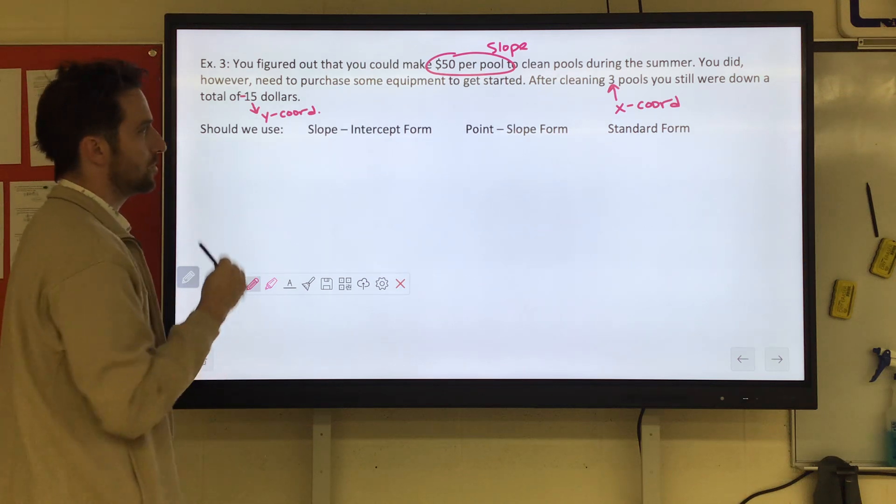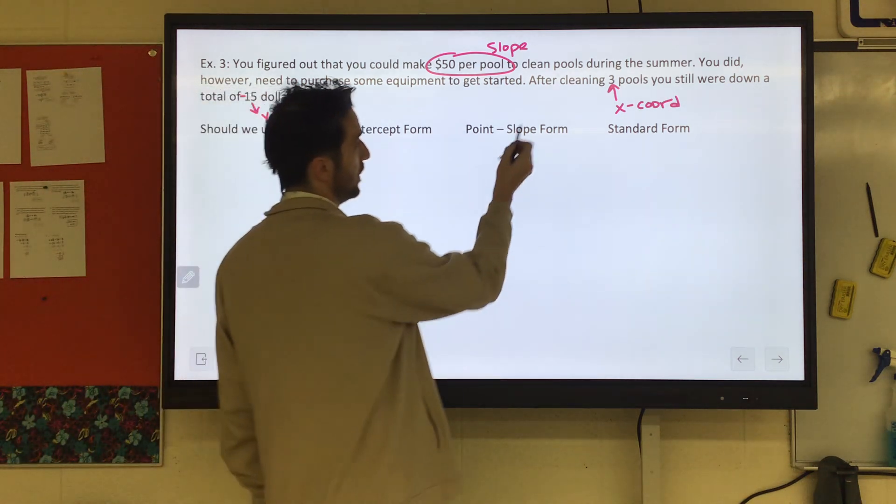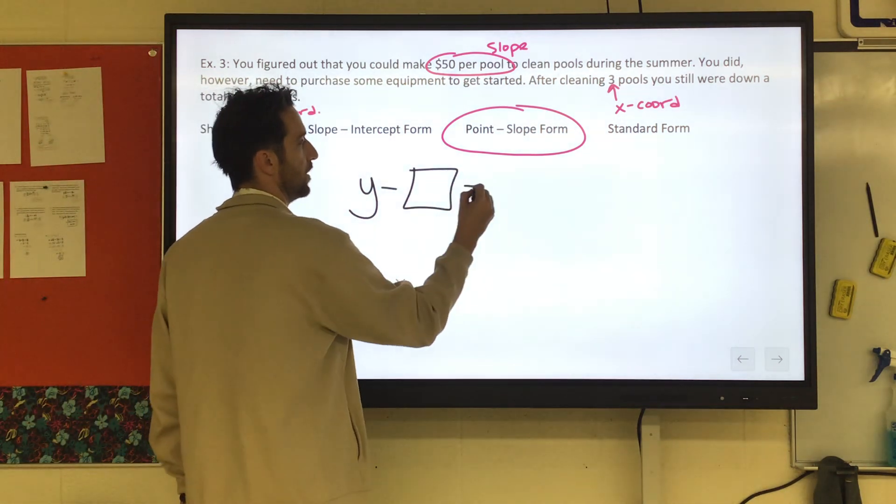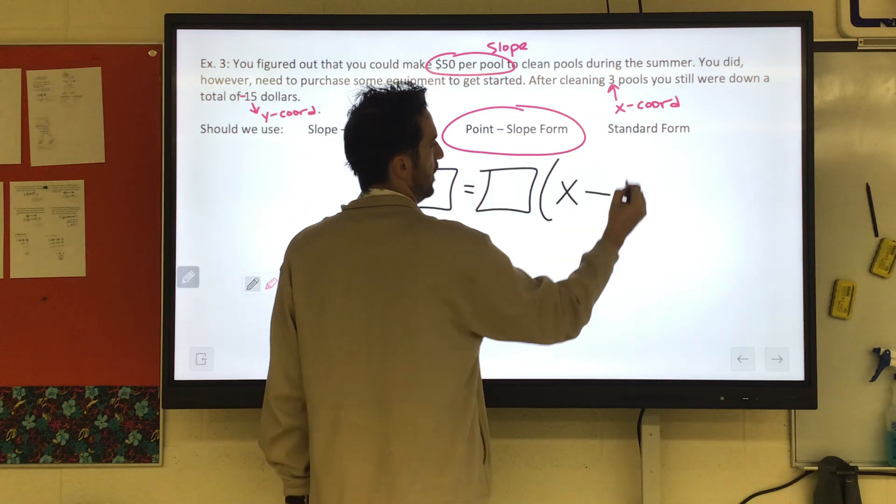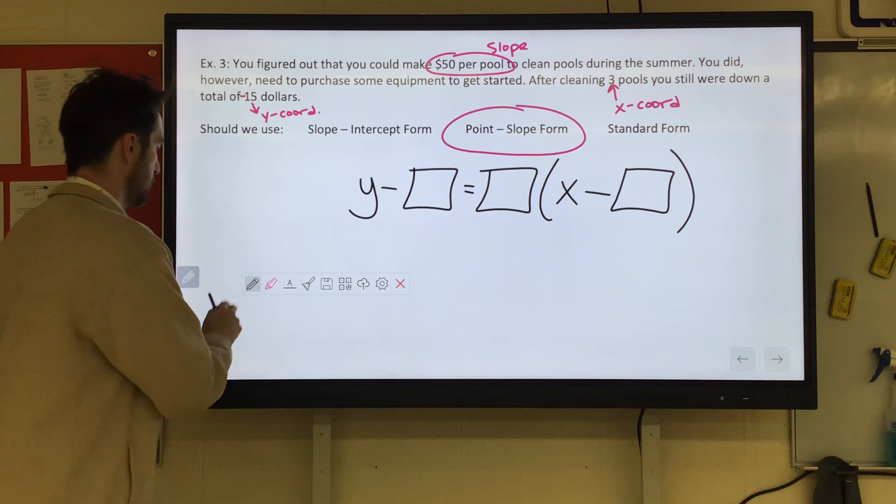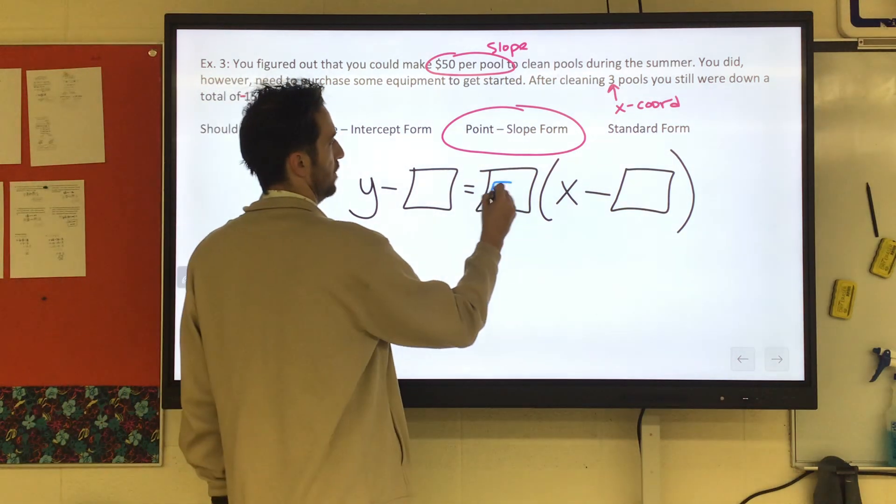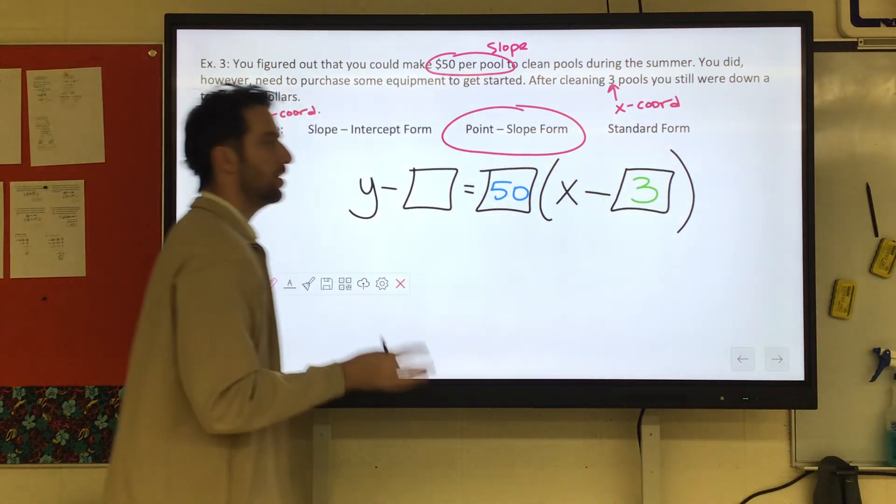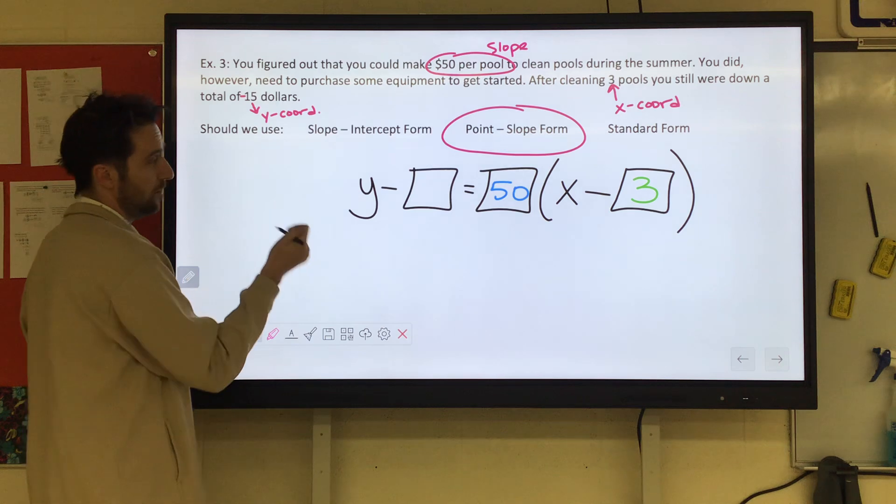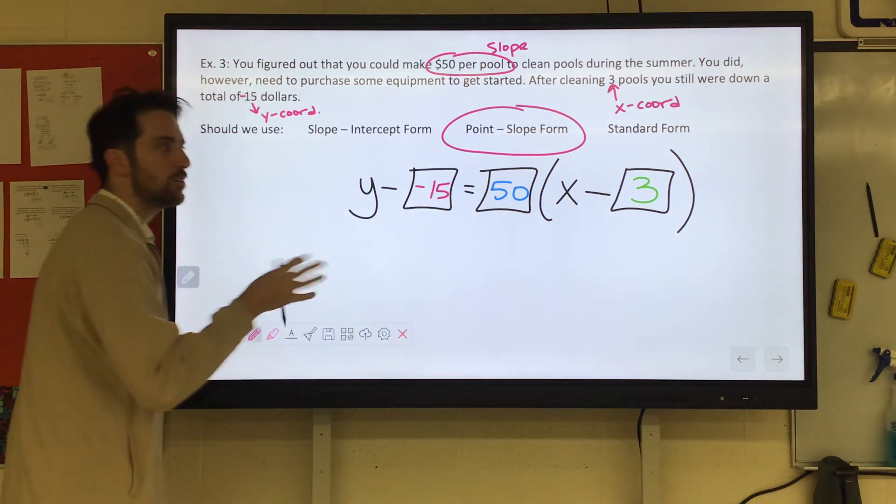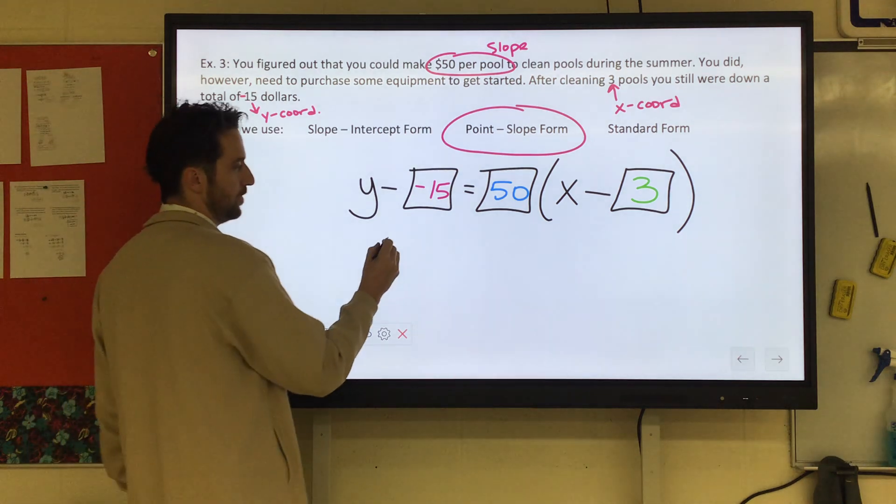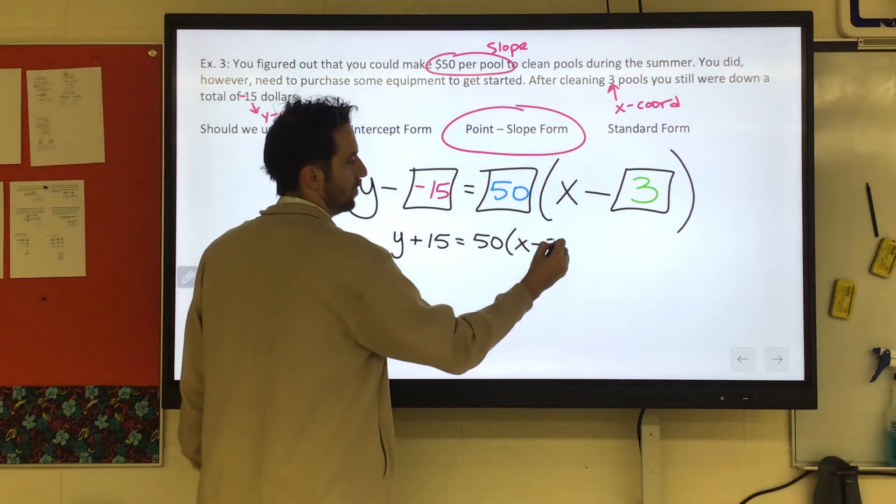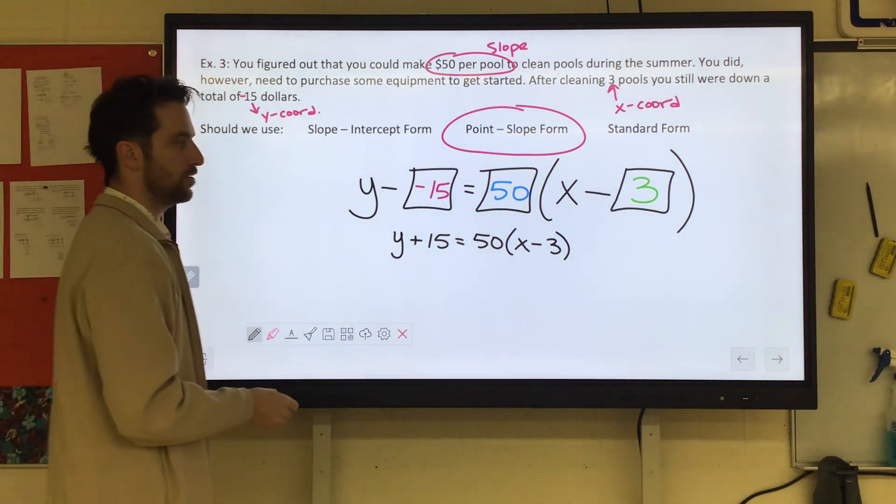Cool. So we have a slope and we have two different coordinates. That plays pretty well into the point-slope form, which if you remember, it's like y minus something equals m times x minus something. We said that our slope was $50. We said our x-coordinate was positive 3 because we're cleaning three pools. And then our y-coordinate is the amount of money we have, which is negative $15. So if we just clean this up a little bit, I see y minus negative 15. That would become y plus 15 equals 50 times x minus 3. There it is in point-slope form.